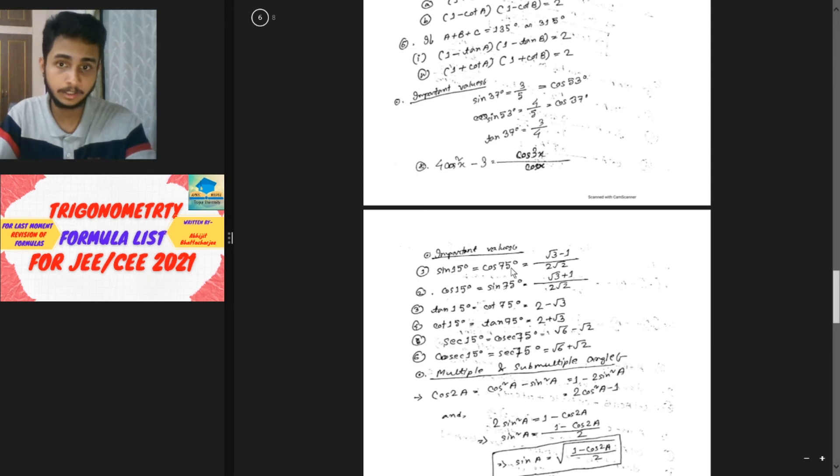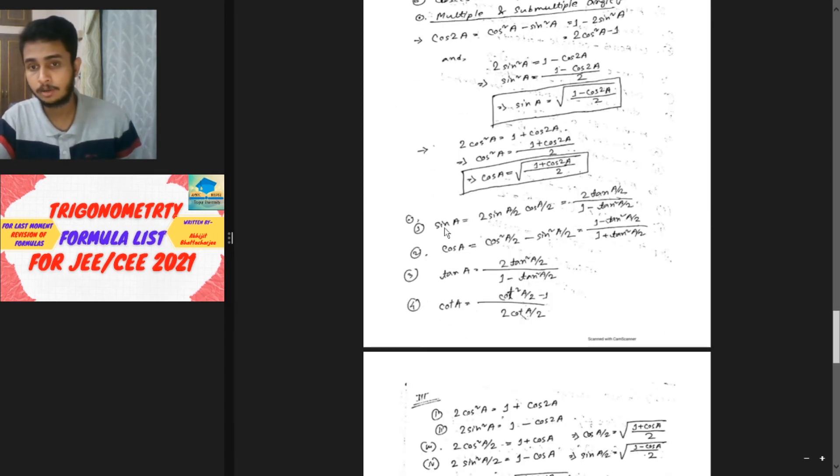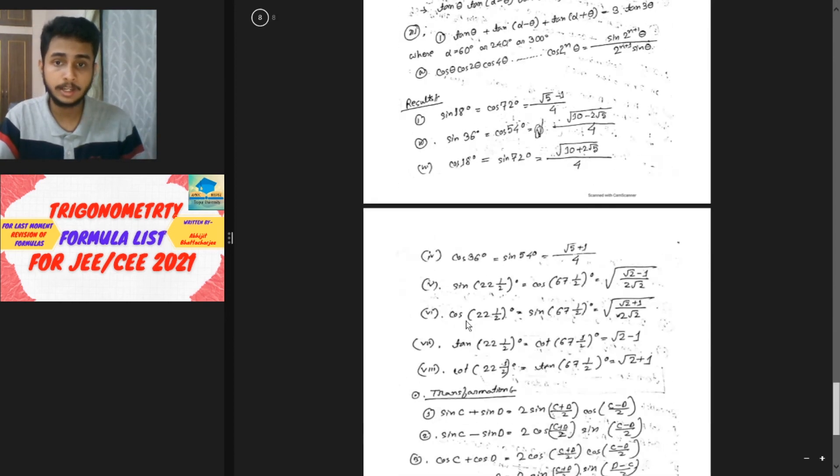Important values include sin 15 degrees and cos 75 degrees. If you have sin 15 degrees or similar values, you can directly find the answer in the solution. I think you have to remember these formulas to solve problems quickly.